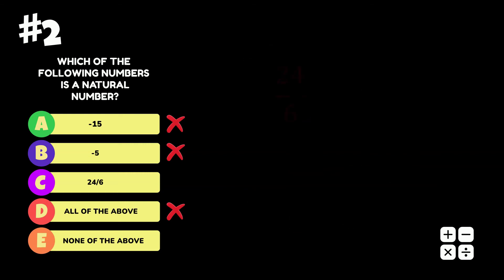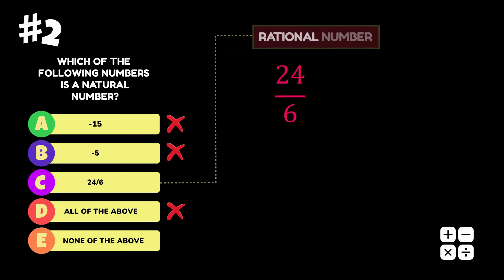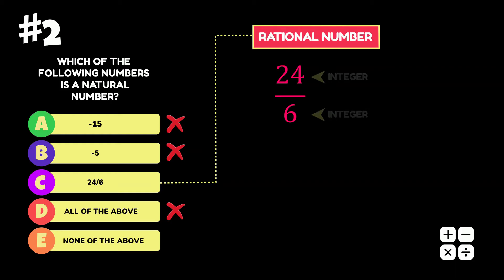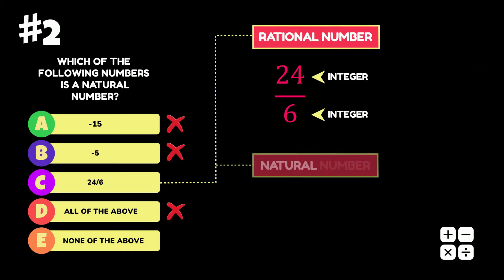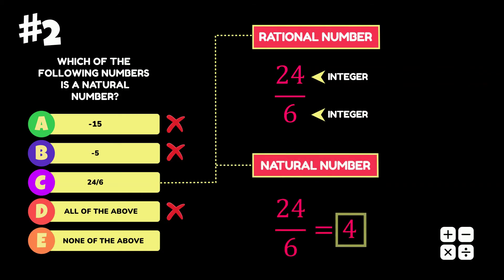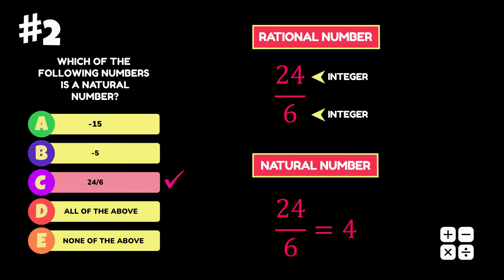24 over 6 is a rational number because it is a ratio or fraction of two integers 24 and 6, but we can also say that this is a natural number because it is another way of representing the number 4 — that is, 24 divided by 6 is equal to 4. Therefore, the answer to this question is option C.